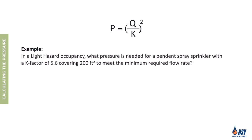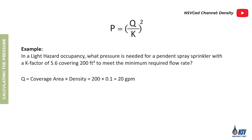For example, in a light hazard occupancy, if a pendant spray sprinkler with a K factor of 5.6 covers 200 square feet, what pressure is required to meet the minimum flow rate? We first multiply 200 by 0.1 to determine the required flow rate, which gives us 20 gallons per minute. Next we divide 20 by the K factor of 5.6 and square the result. The answer is 12.75 psi — the pressure needed to ensure the sprinkler delivers the required flow rate under the given conditions.